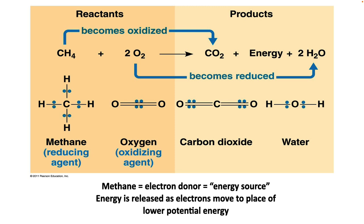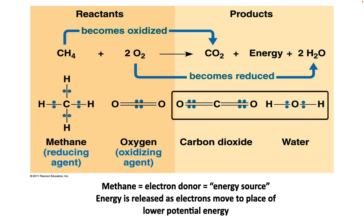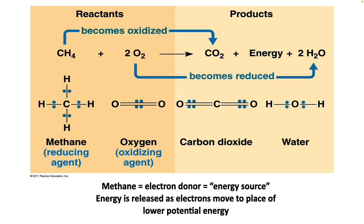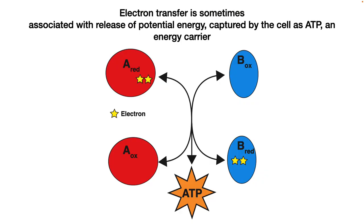Note that what changes is how closely the molecules hold the electrons. Hydrogen does not hold on to electrons well; carbon is in the middle; and oxygen holds them closely — oxygen is electronegative. The electrons move from being held by carbon and hydrogen to being held closely by oxygen, moving from a state of higher potential energy in methane to a state of lower potential energy in carbon dioxide and water. Electron transfers are sometimes associated with the release of potential energy, and this can be captured by the cell as ATP.